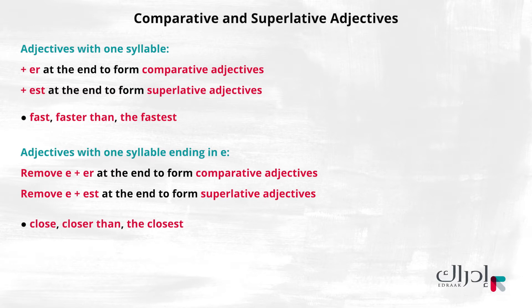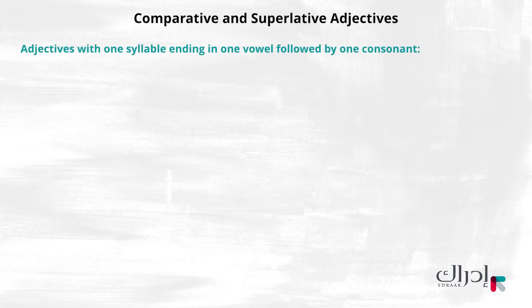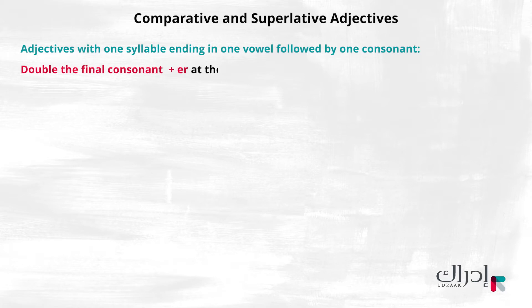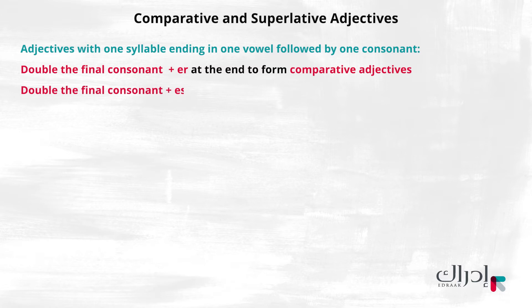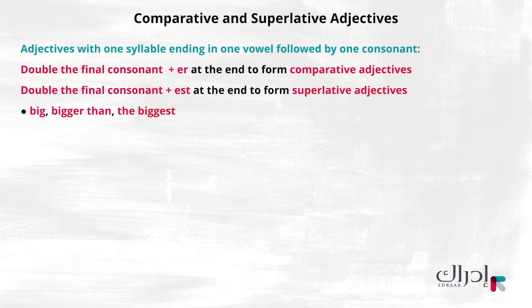Adjectives with one syllable ending in one vowel followed by one consonant — you double the final consonant letter, then add ER at the end to form comparative adjectives, or EST at the end to form superlative adjectives. For example: big, bigger than, the biggest.